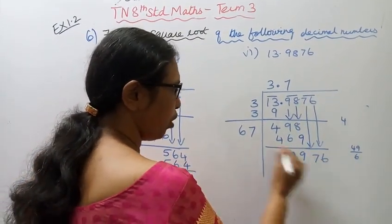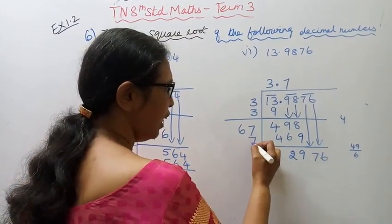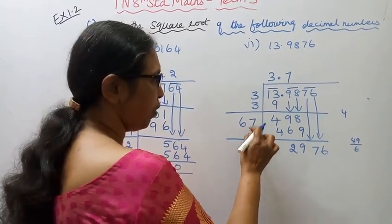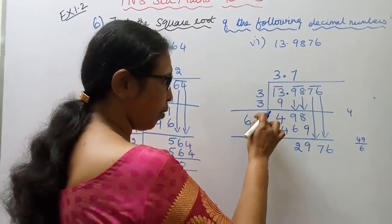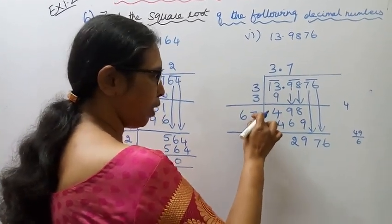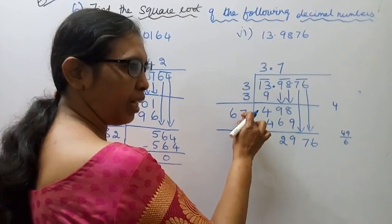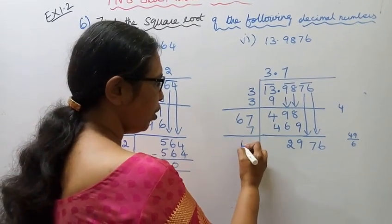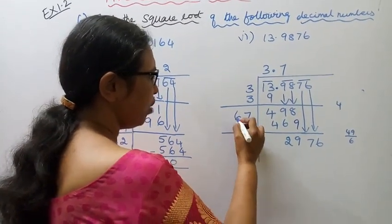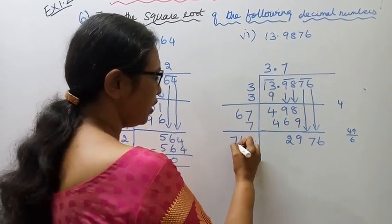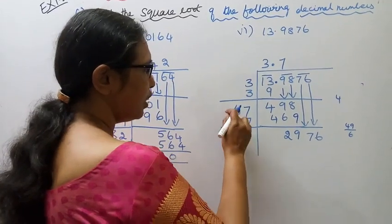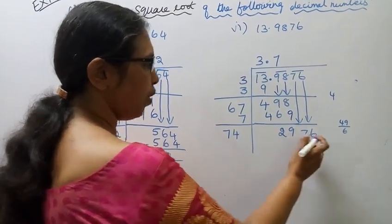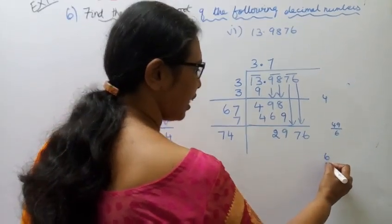Bring down 2 more numbers. Add the left-hand side number by the same number. Left-hand side number by same: 7 plus 7 is 14, plus 1 is 15. Then 6 plus 1 is 7. Now the last number is 6.